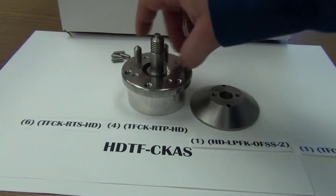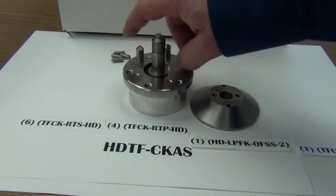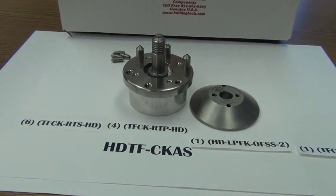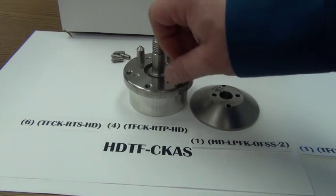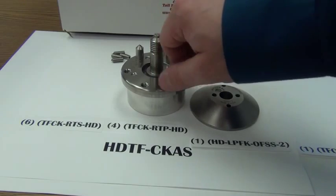With the HDTF-CKAS there are two more parts you'll get with this kit that are not shown in this picture. One is the parting tool kit and the other is the compression nut.